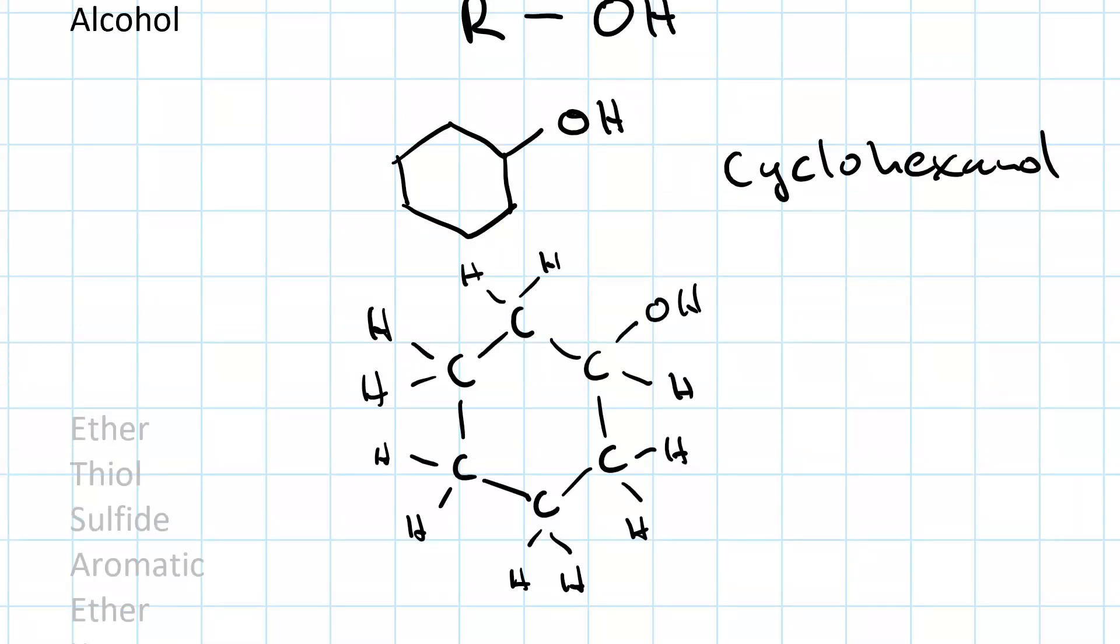An ether contains two R groups, bridged by an oxygen. So there's your bridging oxygen. An example would be diethyl ether. The condensed structure.